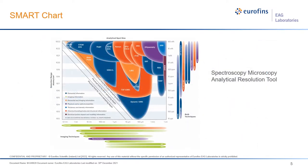The Smart Chart is an acronym for Spectroscopy Microscopy Analytical Resolution Tool. It represents the available techniques at EAG graphically, allowing easy selection of suitable techniques based on fundamental metrology characteristics such as spot size and detection limits. The colors are deciphered in the legend — for example, dark blue areas provide elemental information primarily, while green areas show imaging information and red is in between.